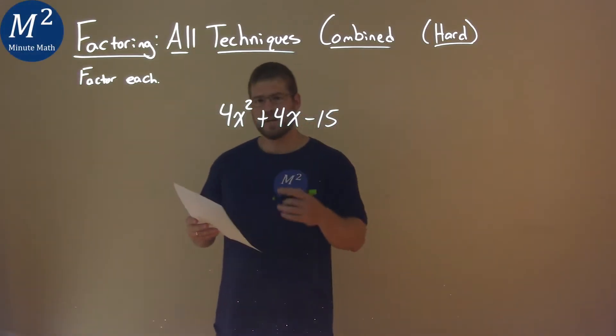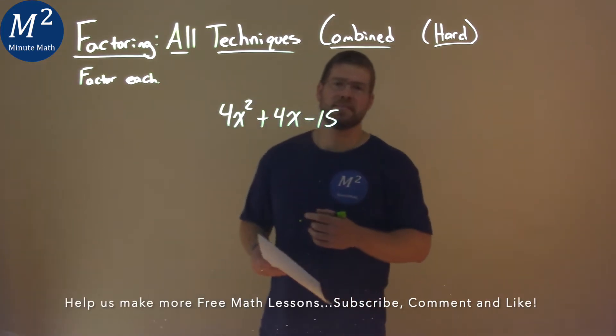We're given this problem right here, 4x squared plus 4x minus 15, and we've got to factor this.